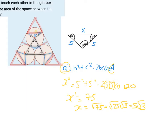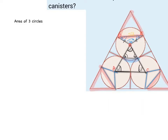Now I have enough information to find the area of all the parts. My strategy is to first find the area of the three circles, then find the area of all the triangles and squares, and subtract one from the other to get the space. The area of one circle is πr², so three circles gives 3πr² = 3 × π × 5² = 75π.